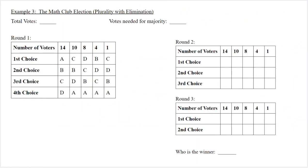Let's look at an example — going back to the math club. It helps to write out a lot of work for this method. We have 37 total members. A majority requires more than 50%, so a majority is 19 first place votes.